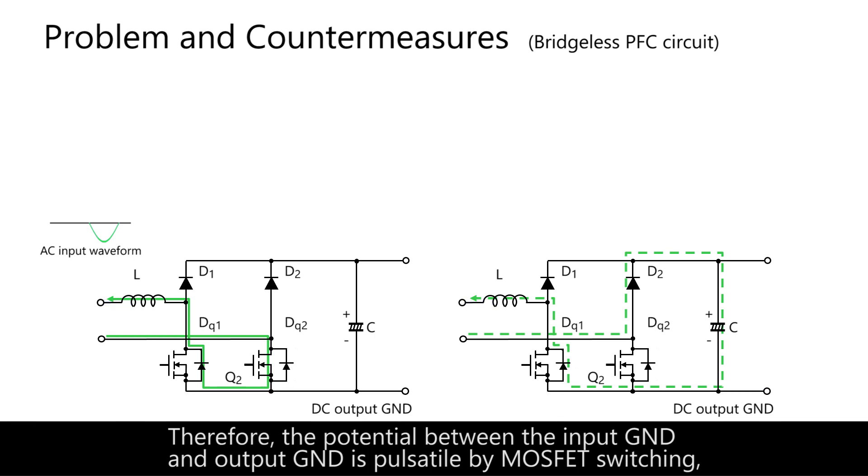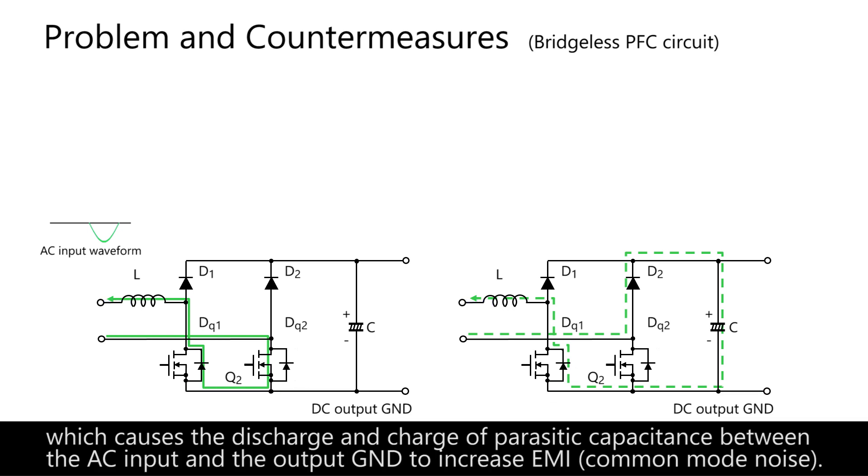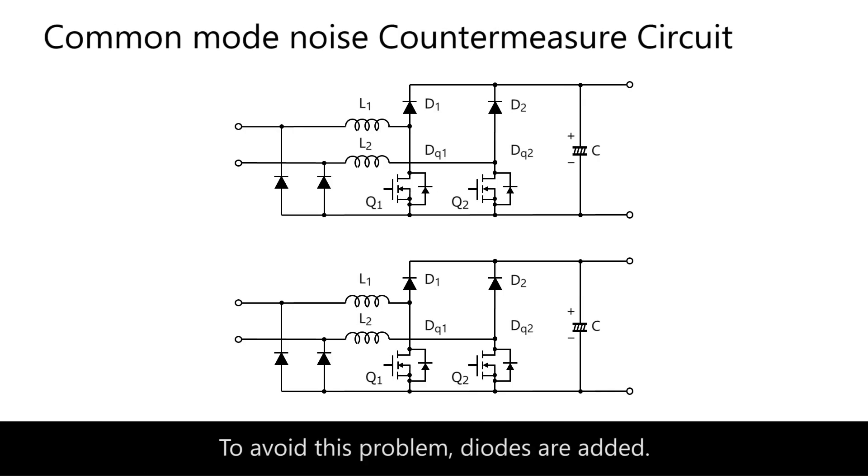Therefore, the potential between the input ground and output ground is pulsatile by MOSFET switching, which causes the discharge and charge of parasitic capacitance between the AC input and the output ground to increase EMI.